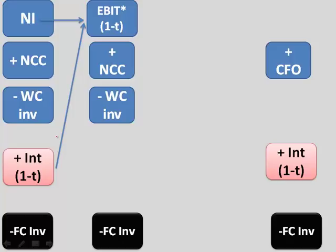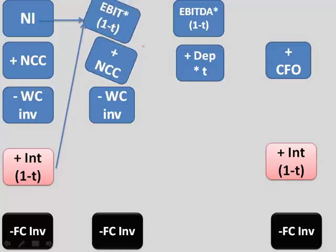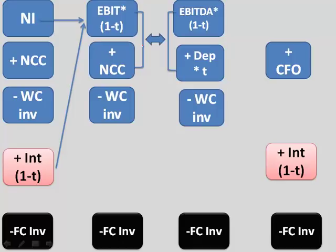So what we do is EBIT into 1 minus T, and then we add back depreciation into the tax rate, which would give us these two numbers here together. So we will see how it works. EBIT into 1 minus T plus depreciation into T. This is equal to these two numbers. And once we know that, then we just need to plot the remaining ones. And you have your EBIT formula ready. So these are the four set of formulas.